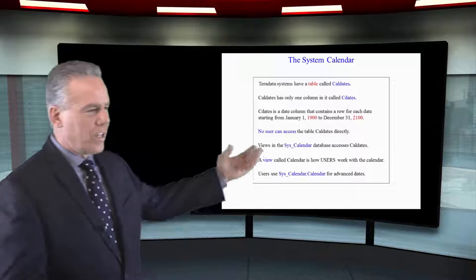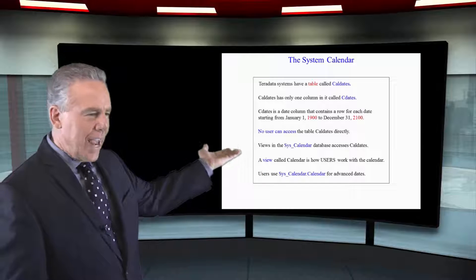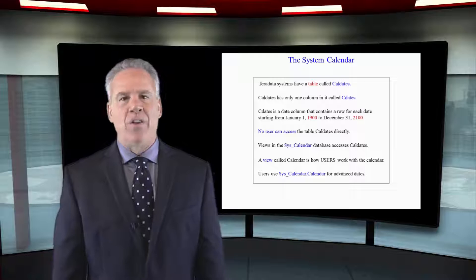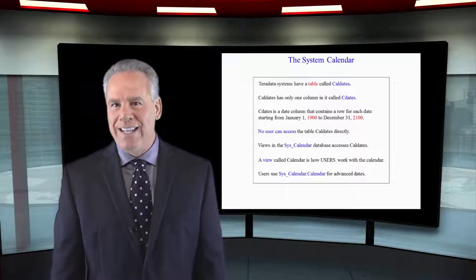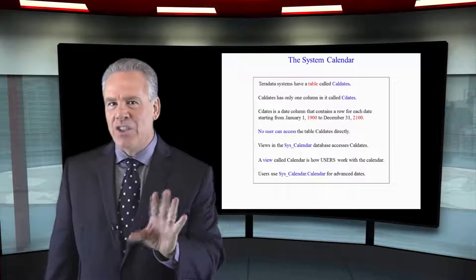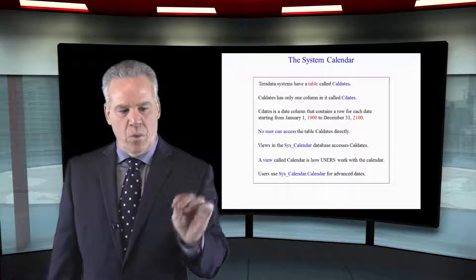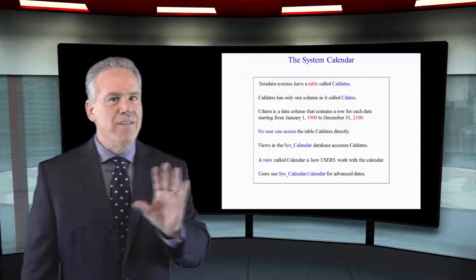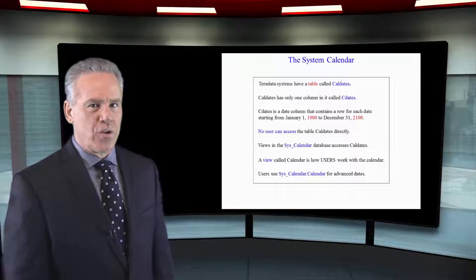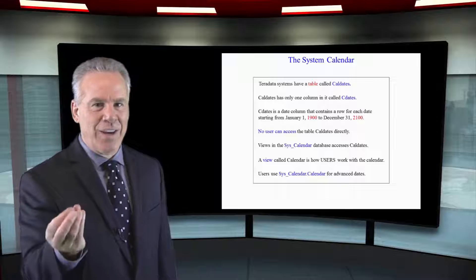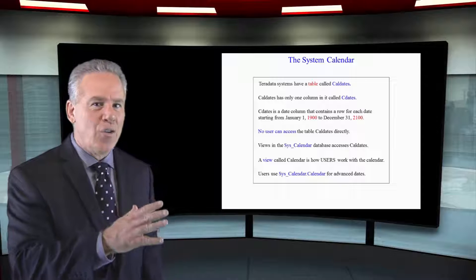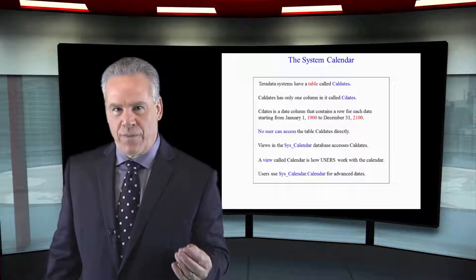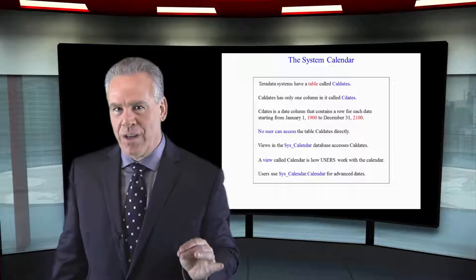The calendar is actually called Cal Dates — it's a table. There's only one column in there and it's called C Dates. It actually starts with one row, one column, for every day since January 1st, 1900, and it goes to December 31st, 2100.